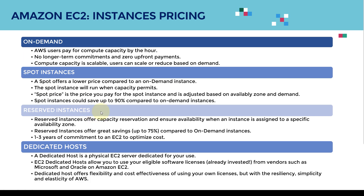Reserved instances offer capacity reservations. You can say you need to reserve for, say, three years up front, and that's what we call a reserved instance. You can get a massive discount, ensuring availability without needing on-demand or spot ones. Reserved instances can offer up to 75% savings compared to on-demand instances. You can commit to one to three years of an EC2 to optimize cost — the longer the contract, the cheaper the rate.